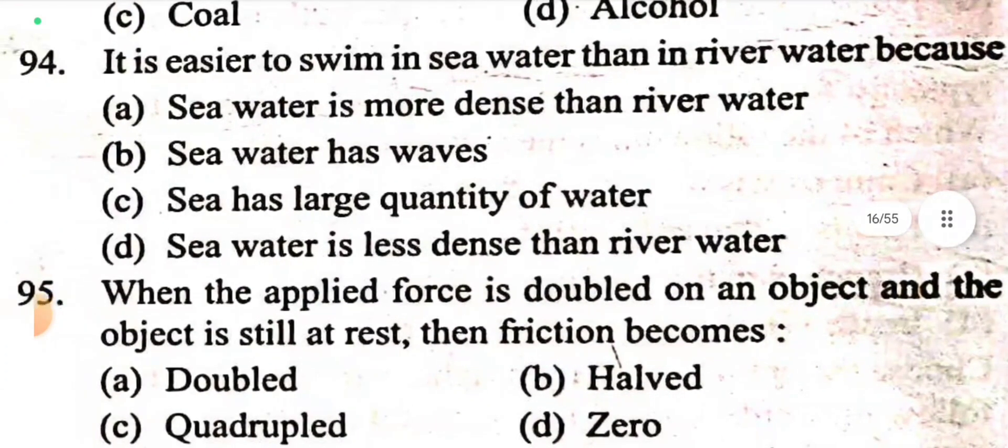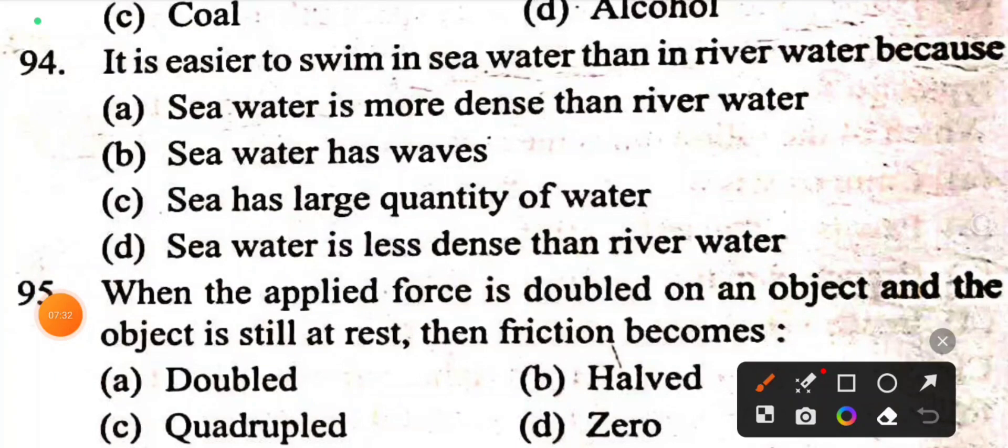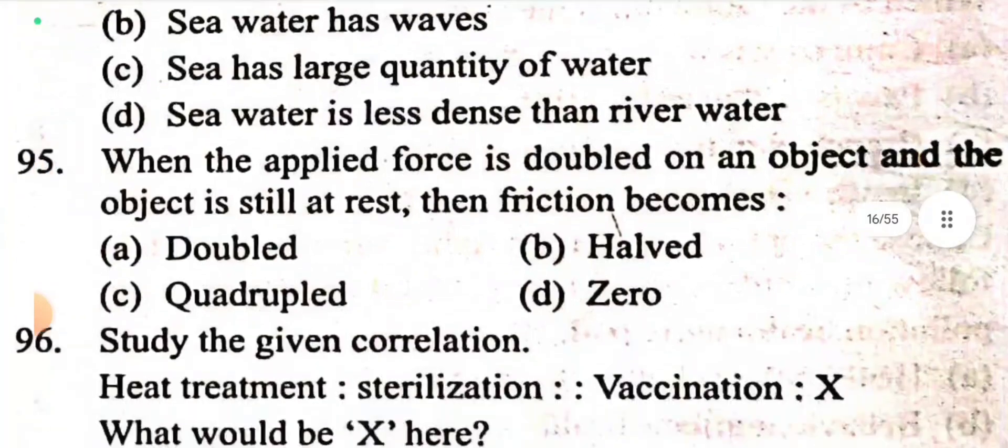Question 94: It is easier to swim in seawater than in river water because the density is more. Seawater consists of a lot of salt, so seawater is more dense than river water.